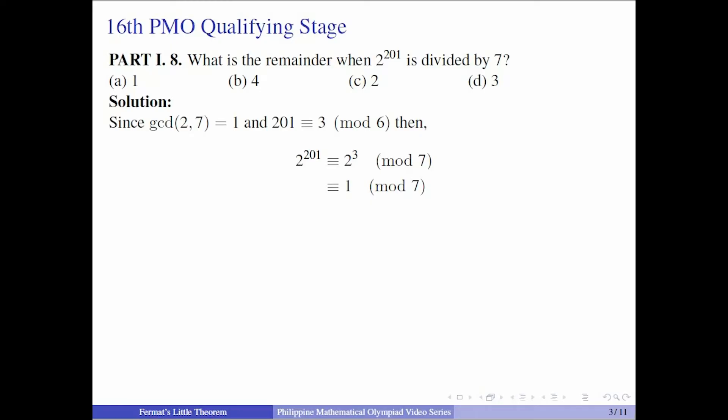2 and 7 are relatively prime, and 201 ≡ 3 (mod 6). We can use Fermat's Little Theorem. So 2^201, we reduce the exponent to mod 6. So 2^201 ≡ 2^3 (mod 7). And 2^3 is 8, which is 1 mod 7. So the answer is A, equals 1.